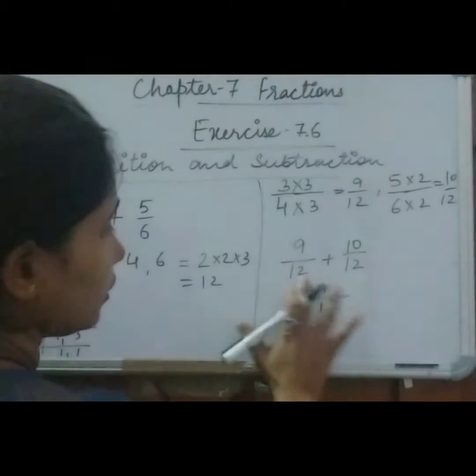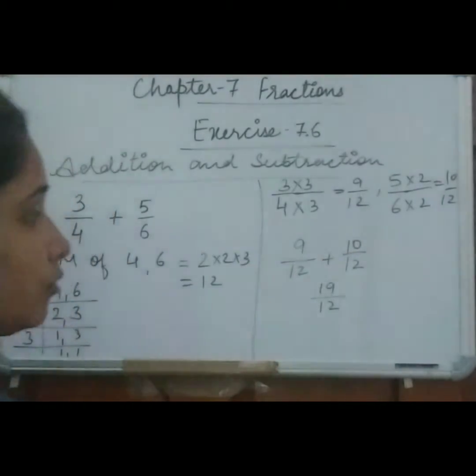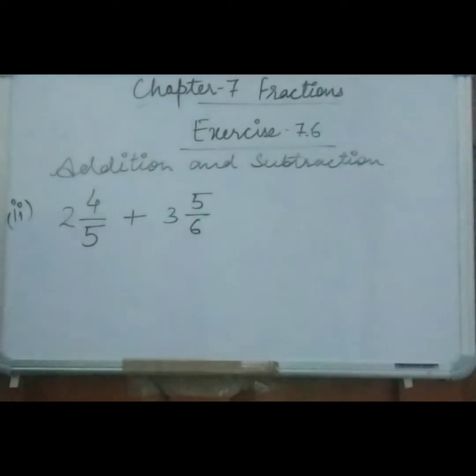This is 12, this is 12, this is 19. So what is the answer? 19 upon 12. This is the answer. Now see the next one example.